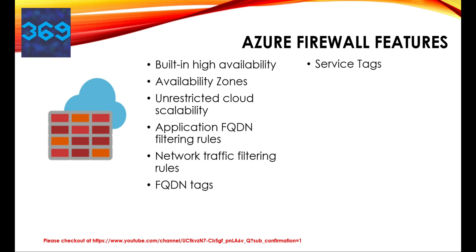A service tag represents a group of IP address prefixes to help minimize complexity for security rule creation. You cannot create your own service tags nor specify which IP addresses are included — Microsoft manages the address prefixes encompassed by the service tags and automatically updates them as addresses change. For threat intelligence, threat intelligence-based filtering can be enabled for your firewall to alert and deny traffic from and to known malicious IP addresses and domains, which are sourced from the Microsoft threat intelligence feeds.